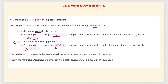The deviation of the array is the maximum difference between any two elements — basically the difference between the maximum number and the minimum number. We have to find the minimum deviation. So we basically need to try to minimize the maximum towards the minimum side, and increase the minimum towards the maximum side, so that their difference is reduced.